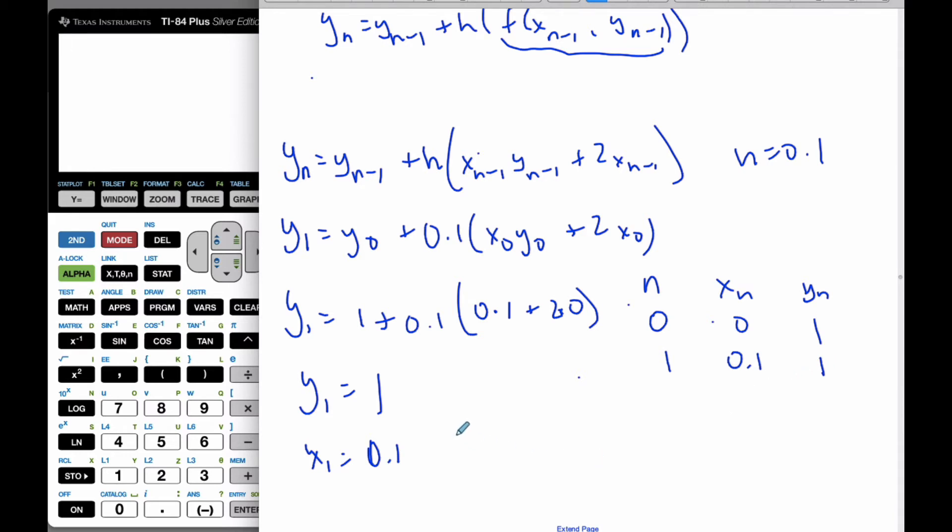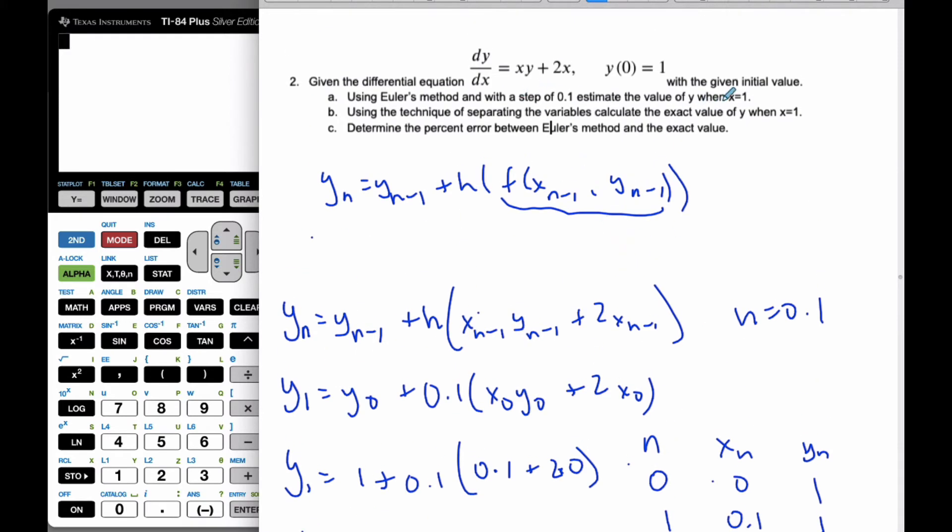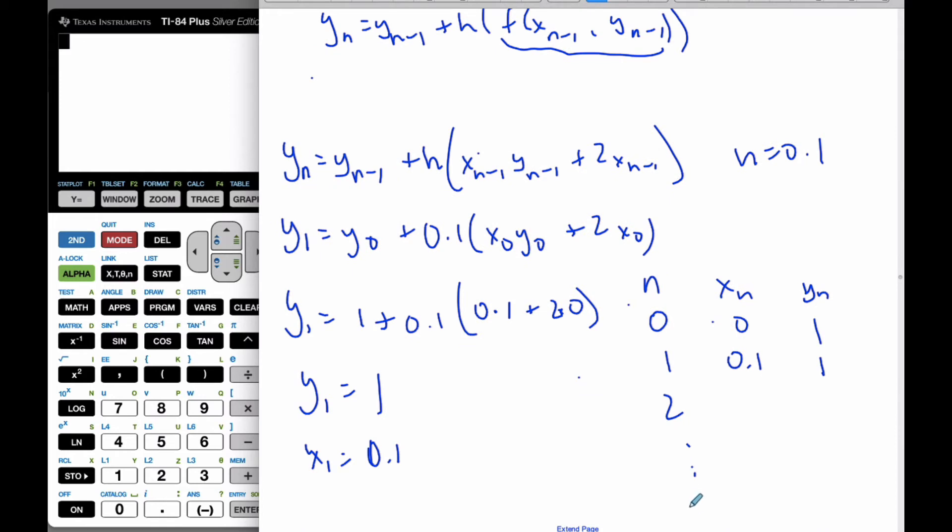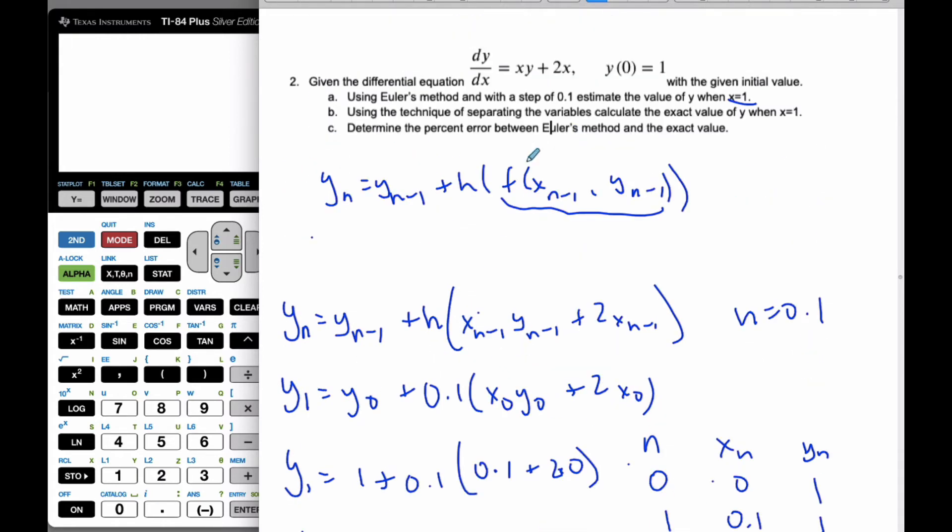Okay, and this is going to keep on going forever. I'm going to keep on going until I'm at the value of x equal to 1. So there's really going to be 10 iterations of this, and then I'm going to get 1 for x. But that's going to be too much work to do by hand. Euler, he had to do it by hand. We're not going to do it by hand. We're going to use our technology.